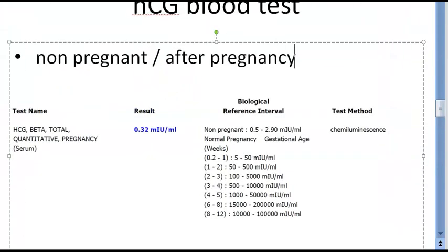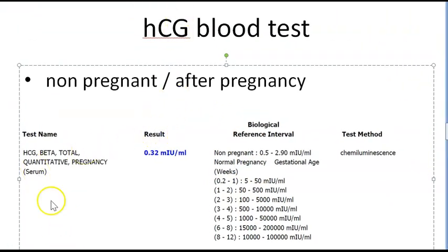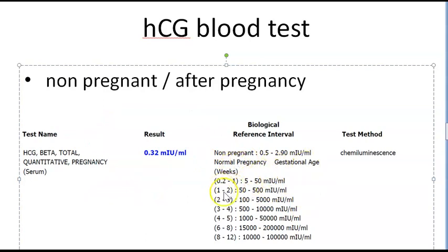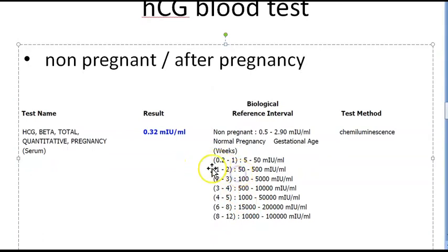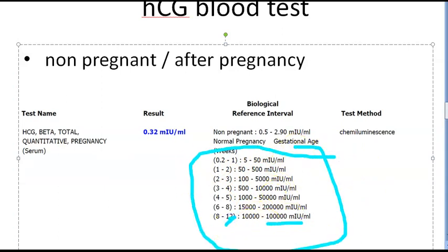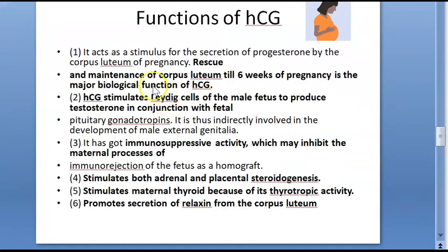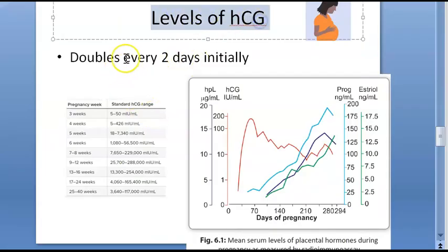Looking at a blood test for a non-pregnant person — this is a blood test, not a urine test — the value reported is around 0.32 milli international units per ml. In a normal pregnancy, the HCG level keeps increasing up to around 12 weeks, reaching about 100,000 milli international units, which is approximately 100 international units. These are blood levels of HCG, not urine. The level of HCG is very important and worth understanding from the graph.